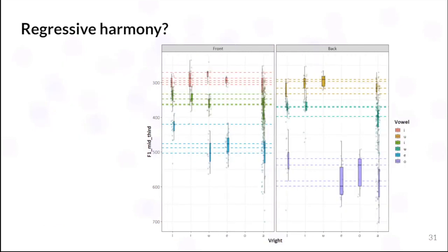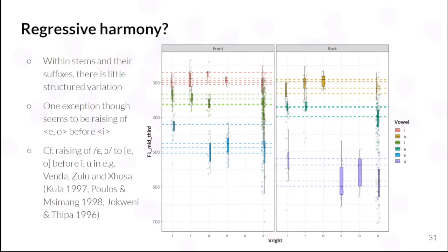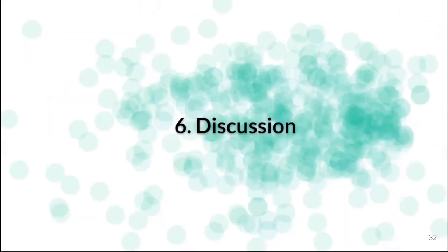And then comparing, looking within stems and their suffixes, there is here little structured variation, but there's one exception, which seems to be, there is quite a substantial degree of raising in E or O here when the following vowel is E. And now this puts me in mind of something that you get in various southern Bantu languages, such as Venda, Zulu, Xhosa, which is that the underlying lax mid vowels are tensed before E and U, so the high tense vowels. So, this is potentially one instance of regressive harmony, of a sort.